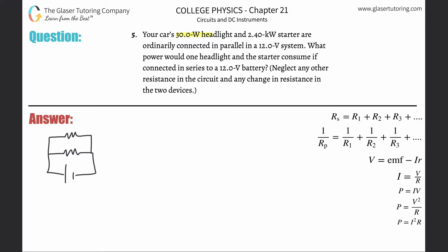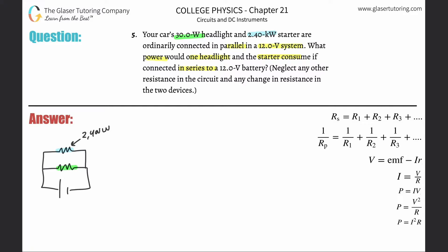Problem number five: your car's 30-watt headlight and 2.4-kilowatt starter are ordinarily connected in parallel in a 12-volt system. What power would one headlight and the starter consume if connected in series to a 12-volt battery? Here's the parallel arrangement. We have the 30-watt headlight and the 2.4-kilowatt starter — I want consistent units, so that's 2400 watts for the starter and 30 watts for the headlight.